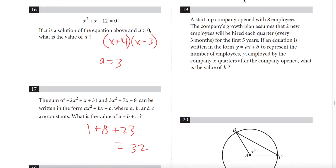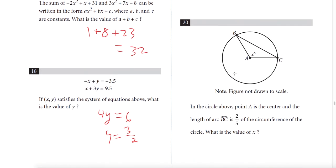Question 19: a startup company opened with 8 employees, adding 2 new employees each quarter. In the equation y = ax + b, b is the initial value, which is 8 because they started with 8 employees.